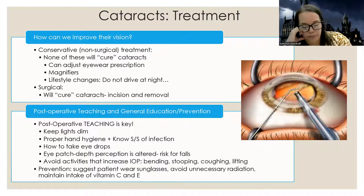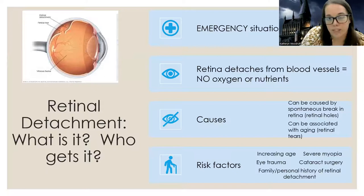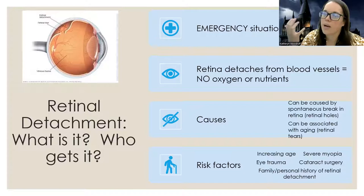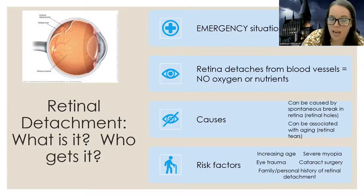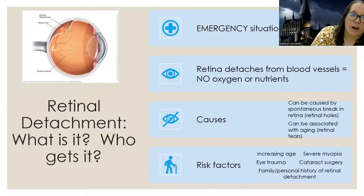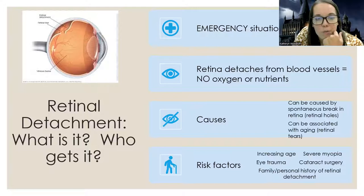Moving on to more serious things: retinal detachment. This is considered an emergency. It's helpful to think about which eye disorders are manageable and chronic versus which ones require immediate action — this is an emergency. What's happening is the retina is actually detaching from the blood vessels in the back of the eye, which leads to zero oxygen and nutrients to the eye. Obviously that's why this is an emergency — lack of blood flow is definitely no bueno.